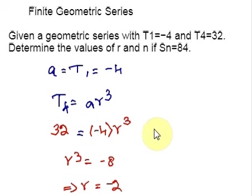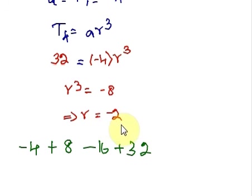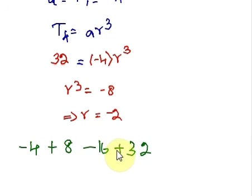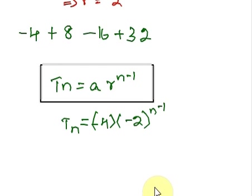The geometric series has alternating signs because R is less than 0 — specifically, negative 2 is less than 0. Whenever R is negative, signs should alternate. The series starts from 4 and the 4th term is 32. The general term is Tn = A times R raised to n minus 1. Now we plug in the values of A and R into this formula. Next, we use the general formula for the sum of the geometric series to determine the value of n.